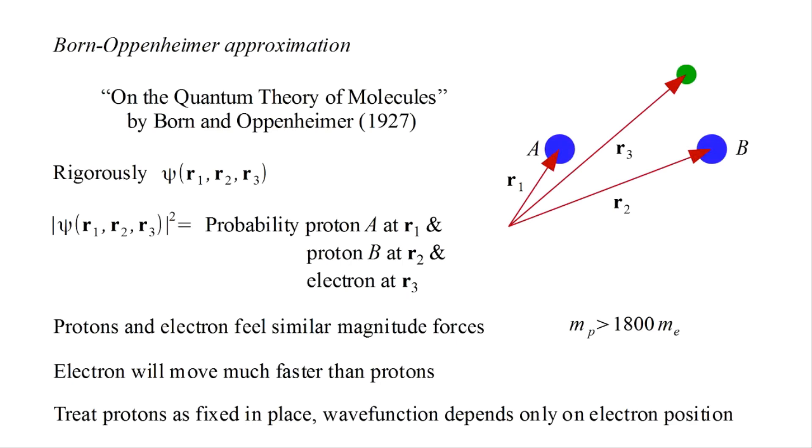Therefore, it's an excellent approximation to treat the protons as fixed in place and have the wave function depend only on the electron position. If the protons move, we assume that the electronic wave function immediately adapts to their new positions. This allows the full molecular wave function to be broken up into an electronic part and a nuclear part. And with this approximation, the Schrödinger equation for the hydrogen molecule ion can be solved exactly for the molecular orbitals. However, this is not true for more complex molecules. So we're going to investigate approximate solutions that can be applied to any molecule.